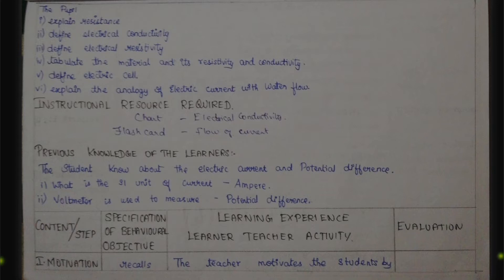Previous knowledge of the learner: the students know about electric current and potential difference — this is from 6th standard. For a simple previous knowledge test: what is the SI unit of current? The answer is ampere. And a voltmeter is used to measure potential difference.